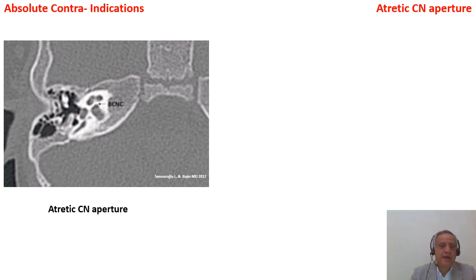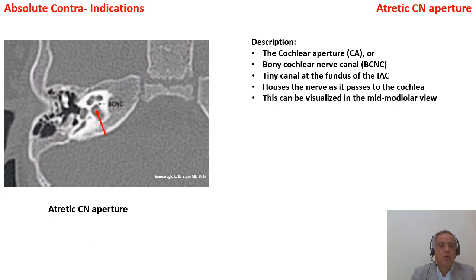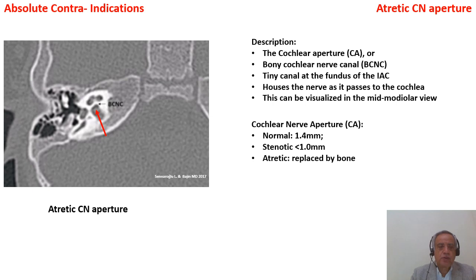The third absolute contraindication: the atletic cochlear nerve aperture, where the bony cochlear nerve canal — abbreviated CA — is closed by an atletic bone, making the cochlear tract unable to receive any cochlear stimulation. Best viewed in the axial mid-modular view. Normal cochlear aperture is 1.4 mm; less than 1.0 mm is stenotic; less than 0.6 mm is severely stenotic; and if replaced by bone, it is called atletic cochlear nerve aperture. Of course, it is sometimes associated with cochlear nerve deficiency.